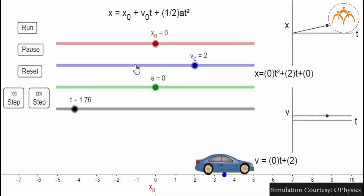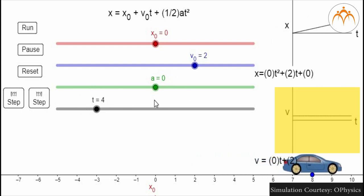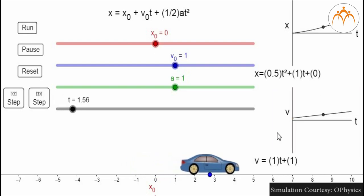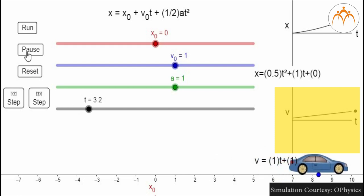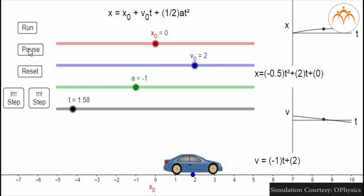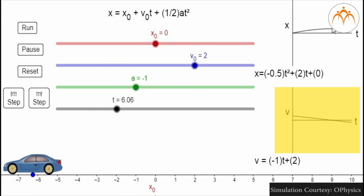A car moving at a constant velocity of 2 meters per second has zero acceleration; its velocity-time graph is a horizontal straight line. A car moving at 1 meter per second and accelerating at 1 meter per second squared has increasing velocity over time — this is positive acceleration, visible as a positive slope on the velocity-time graph. When velocity decreases with time, the slope is negative — this is negative acceleration, also called deceleration. A car with an initial velocity of 2 meters per second experiencing negative acceleration eventually changes direction after some time.